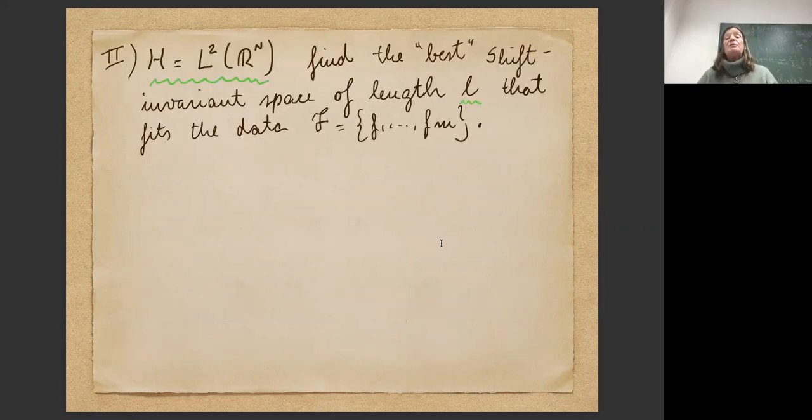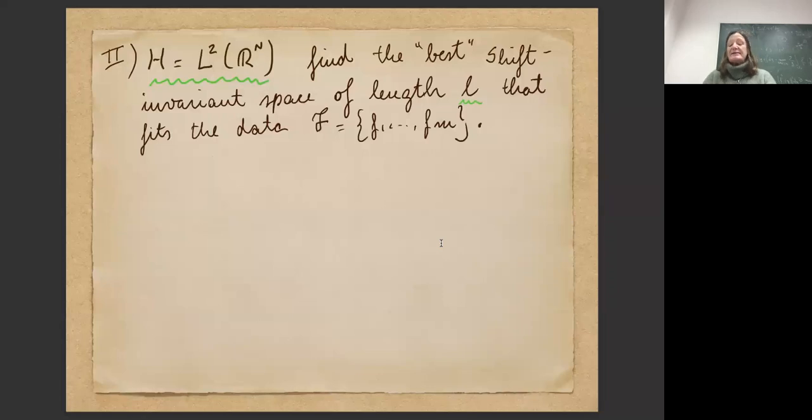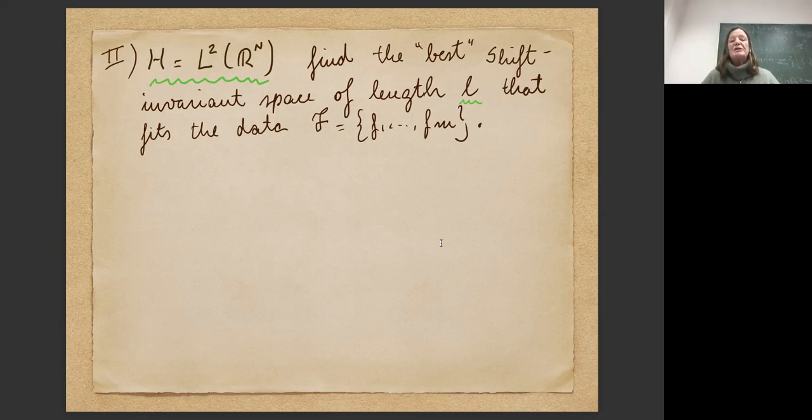The problem comes when we want to go into infinite dimensional space, like we take H equals L2 of R^n. And then I want to find the best shift invariant space of length L that fits the data. Why do I want a shift invariant space? Because in applications, it is very often a good model to model certain types of data. So that's why I will use shift invariant spaces. So far, I don't put any other restriction on the spaces which I want to approximate with.